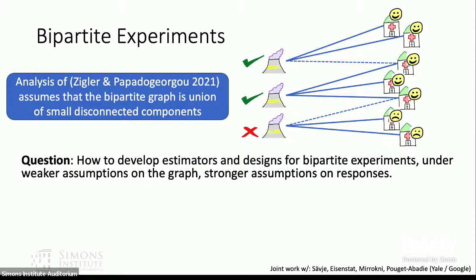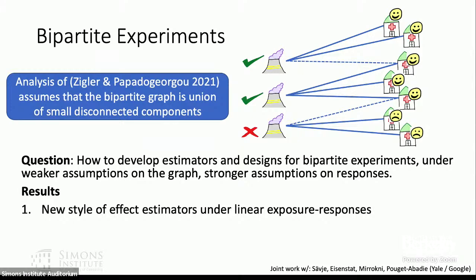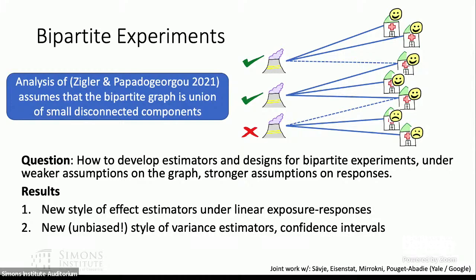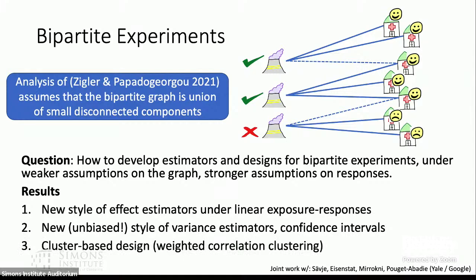Our question was how to develop estimators and designs for bipartite experiments under weaker assumptions on the graph — allowing more overlapping structure — but stronger assumptions on the responses. Our results include: a new style of effect estimators under the linear exposure-response assumption; new variance estimators that we show are surprisingly unbiased; and we use them to obtain asymptotically valid confidence intervals. We also propose a cluster-based design where treatment units are clustered in a very particular way rather than treated independently, based on weighted correlation clustering. The techniques are linear algebra and various clustering algorithms.